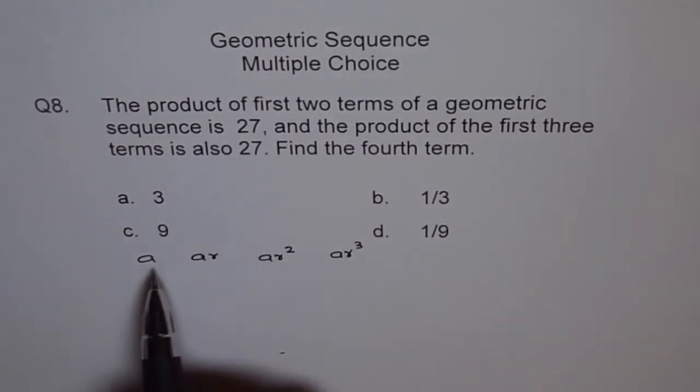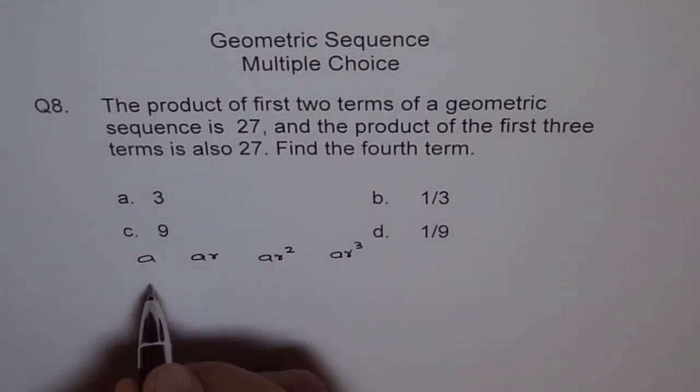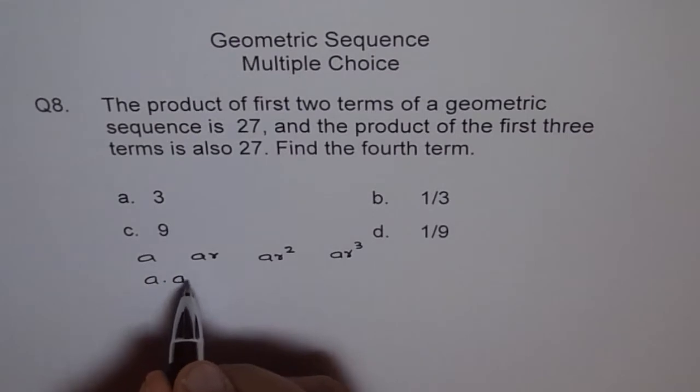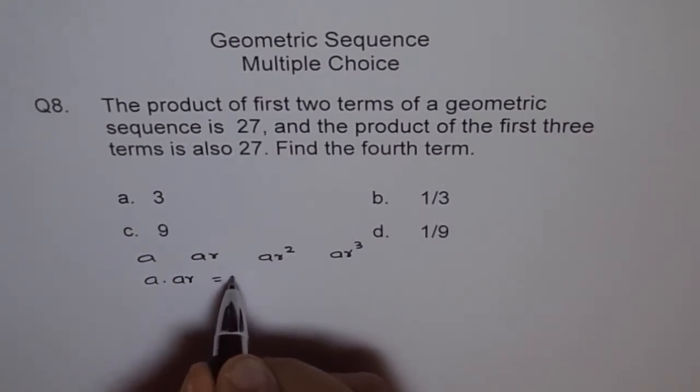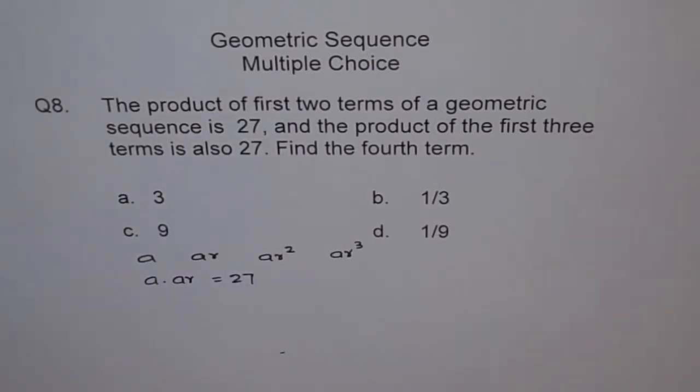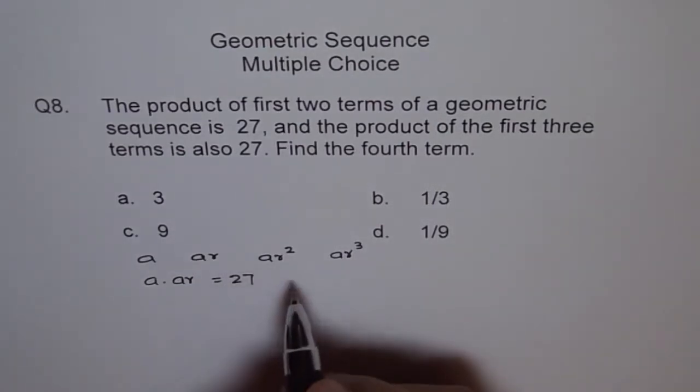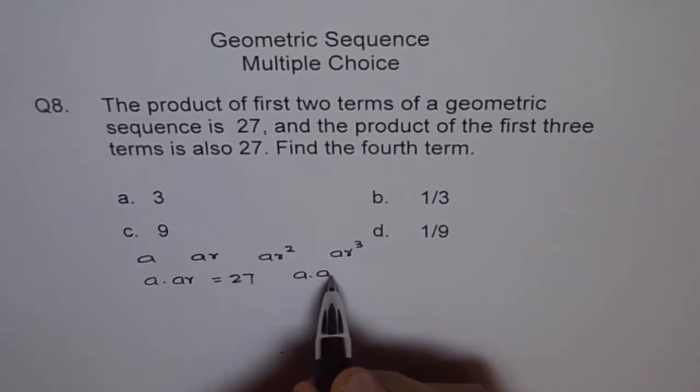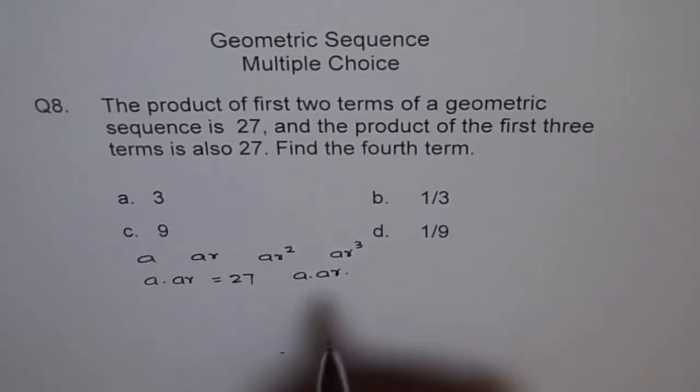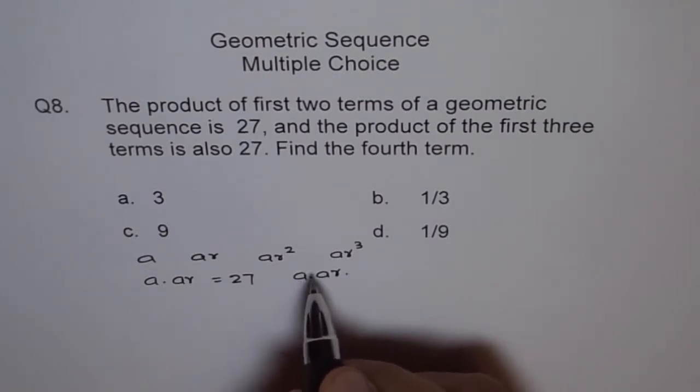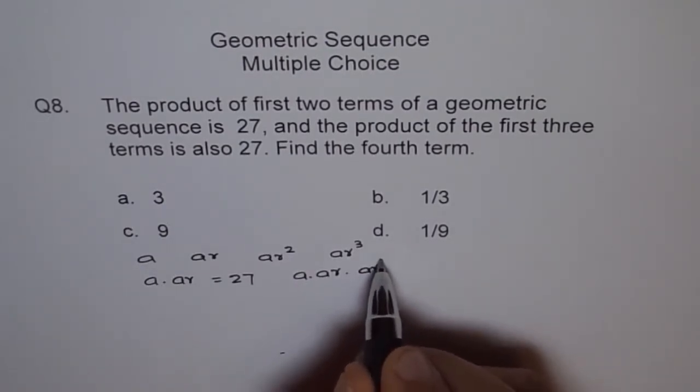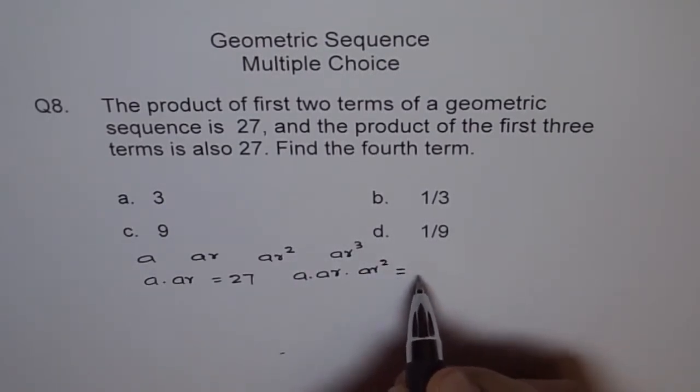Now they say product of first two terms is 27. That means a times ar equals 27. Now they say that product of first three terms is also 27. Three terms means a times ar times ar squared also equals 27.